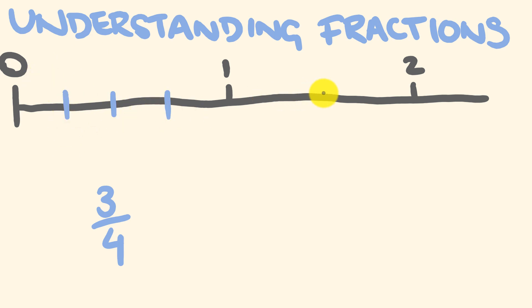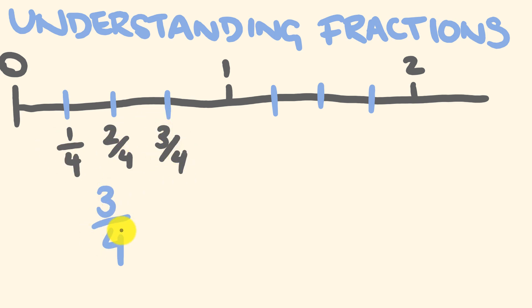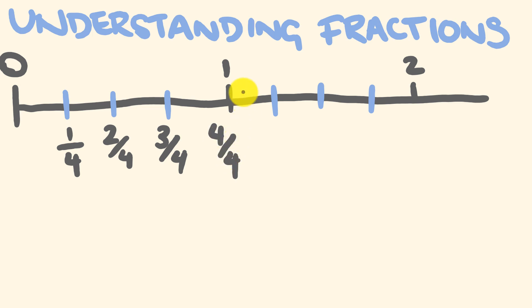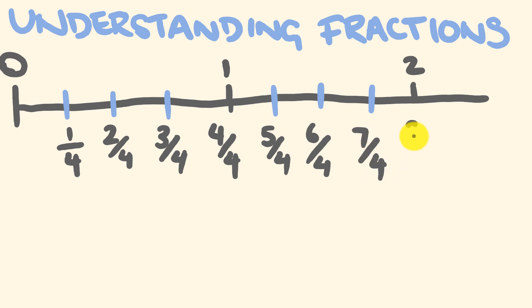Now we can start putting fractions along the number line, all related to quarters. Going along one part we have one out of four; two parts gives us two out of four; three parts gives us three out of four — which is the one we wanted. Going to four out of four equals one, because four divided by four equals one. Continuing: five out of four, six out of four, seven out of four, and eight out of four — eight divided by four equals two.